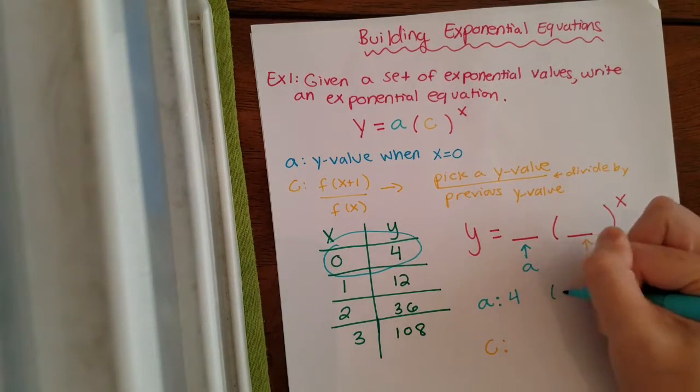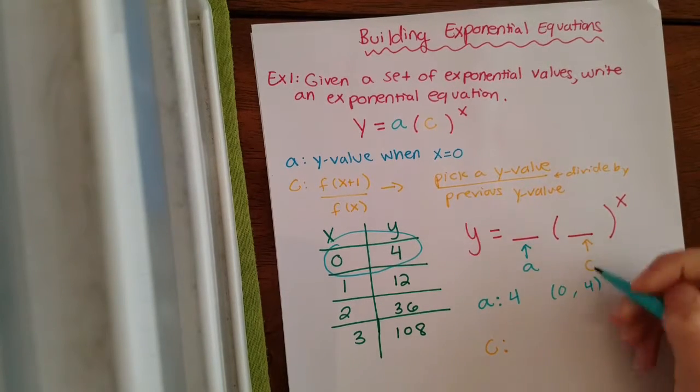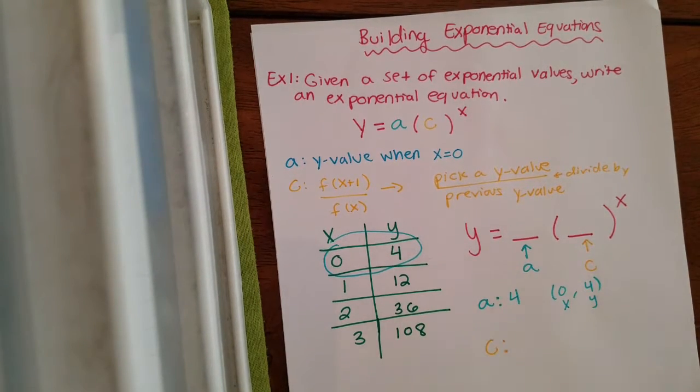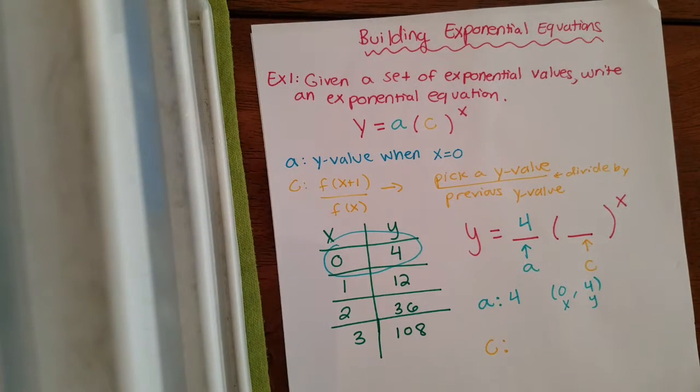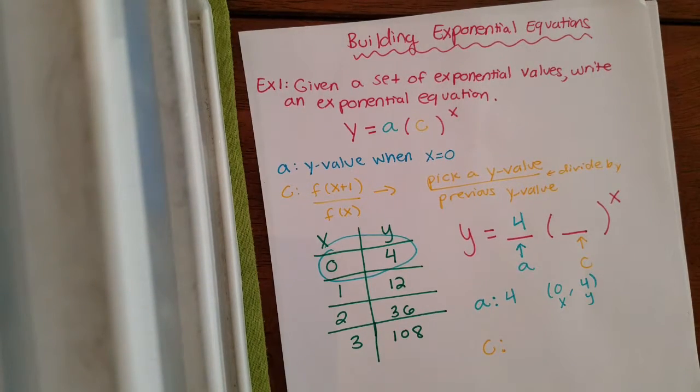Okay, because the point when x is zero, y is four. So all you have to do is fill in a four for your a. That one's pretty simple. Don't overthink the a value.